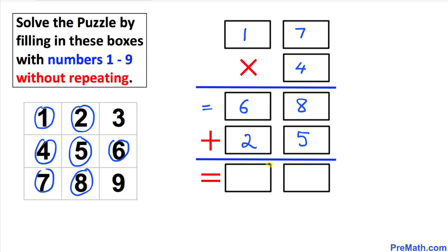If we add these up, 68 plus 25 is going to give us 93, and those are the numbers we have available. So we have solved this puzzle without repeating any of these numbers, and that's our final solution.